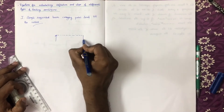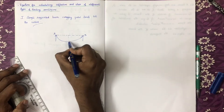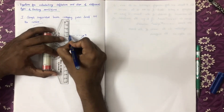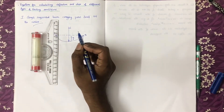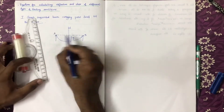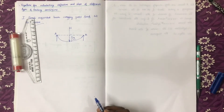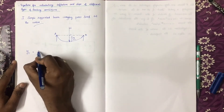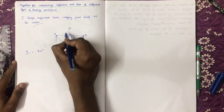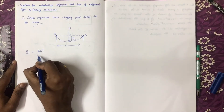The second type of loading is a simply supported beam. The second type of load is a point load W. The deflection is Yn, using points A, B, and C. The formula for deflection is WL³ divided by 48EI.